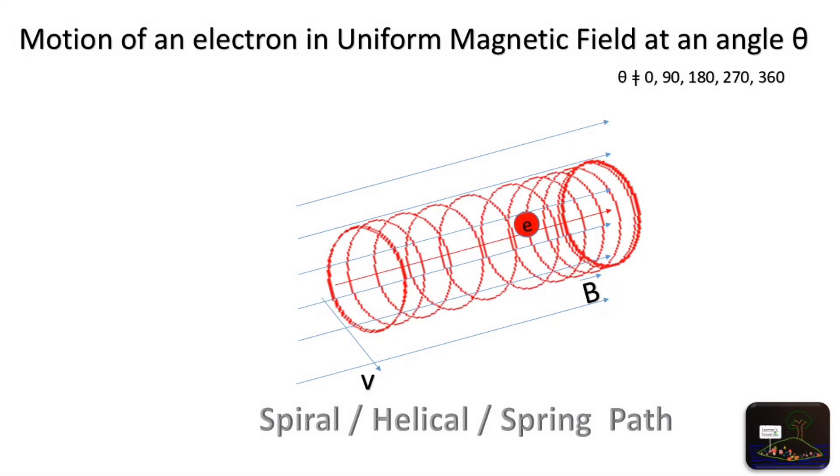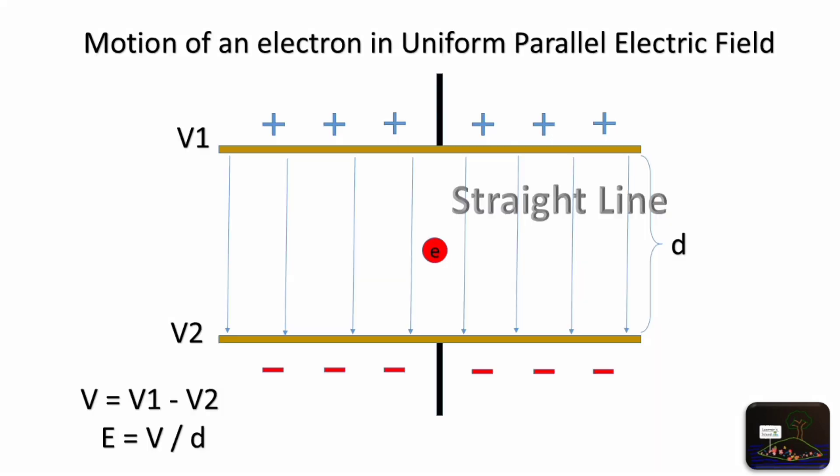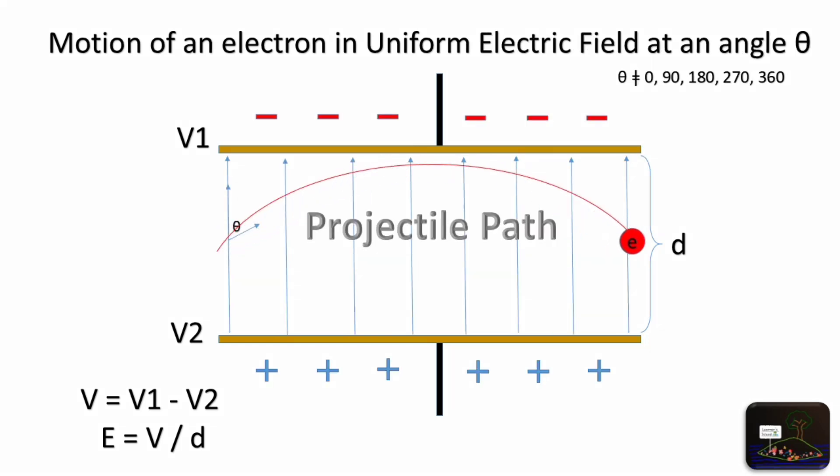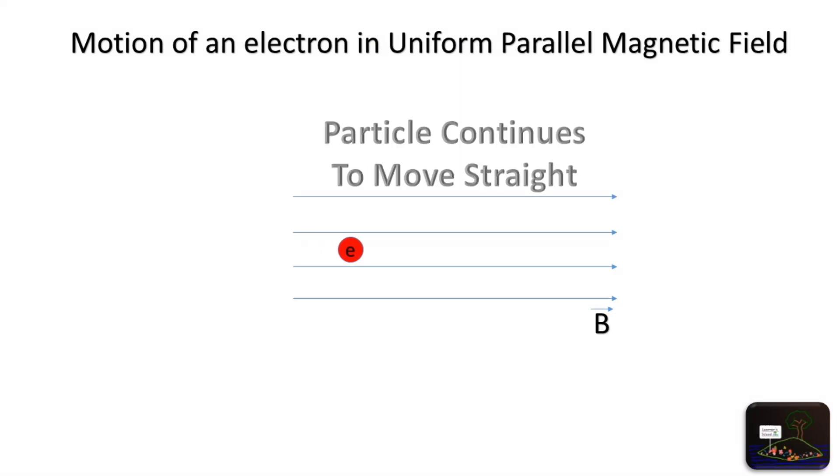Students, we have discussed six cases of electric and magnetic fields. In the next learning bite, we will study the case of crossed field configuration: electric and magnetic field together at 90 degrees to each other and to the electron. Velocity selector.